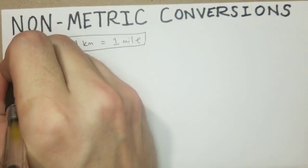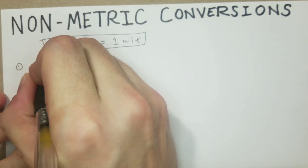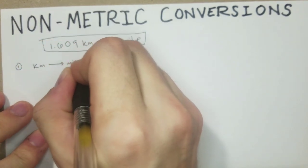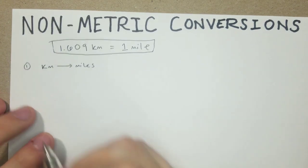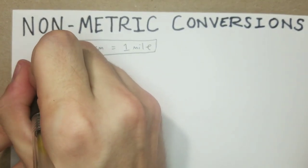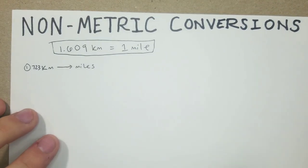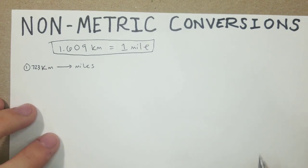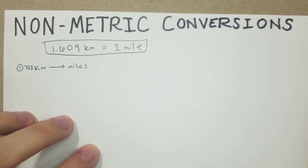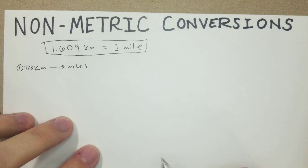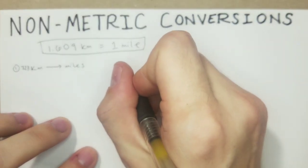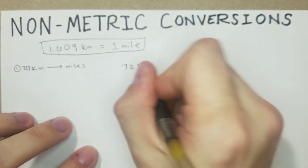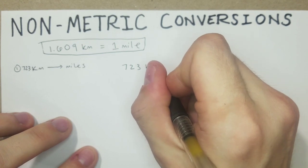So first off, we can start very basic, just going kilometers to miles. Let's say it's 723 kilometers to miles. The best way that I know to set this up is just to start out with what you're given: 723 kilometers.